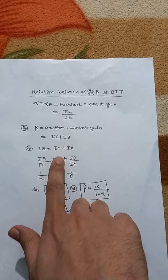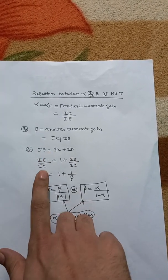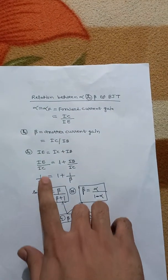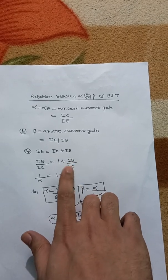We get IE/IC = 1 + IB/IC. As we can see here, IE/IC is equal to 1/alpha. So we write 1/alpha, and IB/IC is equal to 1/beta.